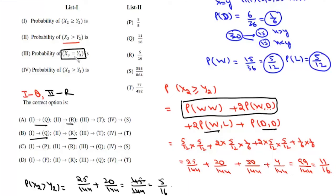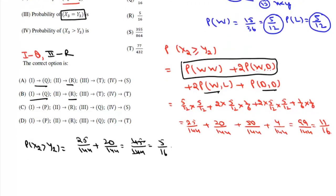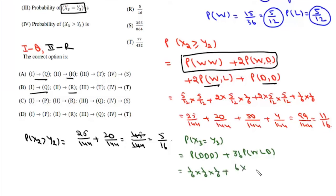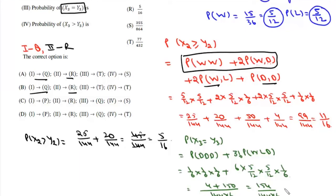The third probability is P(X3 = Y3) — the probability that after three rounds both players have equal scores. This occurs if all three matches are drawn, or if there is one win, one loss, and one draw (arrangeable in 3! = 6 ways). The probability is (1/6)³ + 6×(5/12)×(5/12)×(1/6) = 1/216 + 6×25/144×(1/6) = 4/864 + 150/864 = 154/864 = 77/432. This third probability matches T.